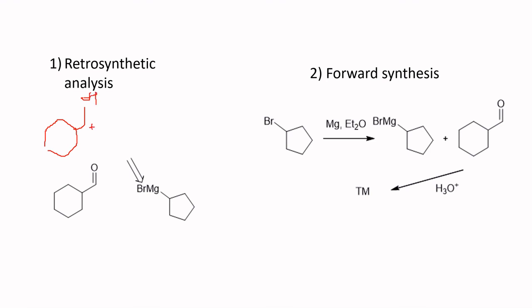From the disconnection you get a synton with a positive charge and a synton with a negative charge. When you have an O-H and the adjacent carbon is positive, your synthetic equivalent is an aldehyde. For the negative synton, you balance it with BrMg to get a Grignard reagent as the synthetic equivalent.